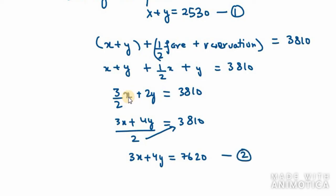Now we have 3x plus 4y equals 7620, and we have x plus y equals 2530. We need to use elimination method and eliminate the value for x. I will multiply the first equation by 3 so that we can eliminate x value. So it is 3x plus 3y equals 2530 times 3, which is 7590.